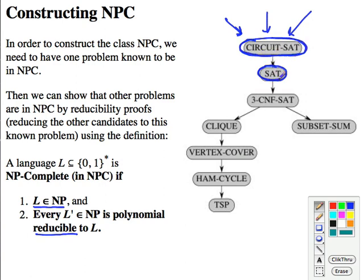And if that one can be reduced to our new candidate, then by transitivity, any other problem in NP can also be reduced to our candidate. And then we'll just build up the tree of known problems that way.